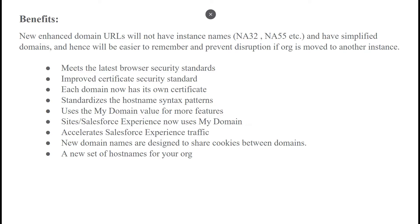There are a lot of benefits. New enhanced domain URLs will not have instance names like na32, na52, etc. They have simplified domains that are easier to remember and prevent disruption when an org is moved to another instance. Benefits include: meeting the latest browser security standards, improved certificate security where each domain now has its own certificate, standardized hostname syntax patterns, use of My Domain value for more features, accelerated Salesforce Experience traffic, and new domain names designed to share cookies between domains.